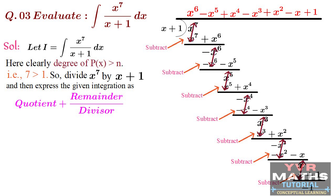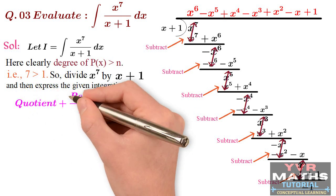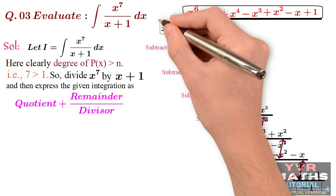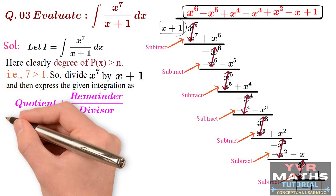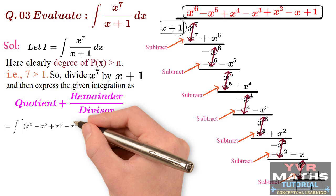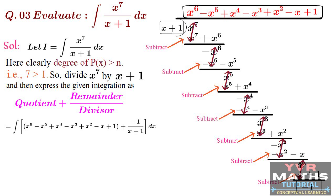After completing the long division, the fraction can be written as quotient plus remainder by divisor. The quotient is x⁶ − x⁵ + x⁴ − x³ + x² − x + 1, the remainder is −1, and the divisor is (x+1). So, as per the algorithm, the integral becomes: ∫[x⁶ − x⁵ + x⁴ − x³ + x² − x + 1 + (−1)/(x+1)] dx. I followed the given algorithm — after completing the long division, write quotient plus remainder by divisor.